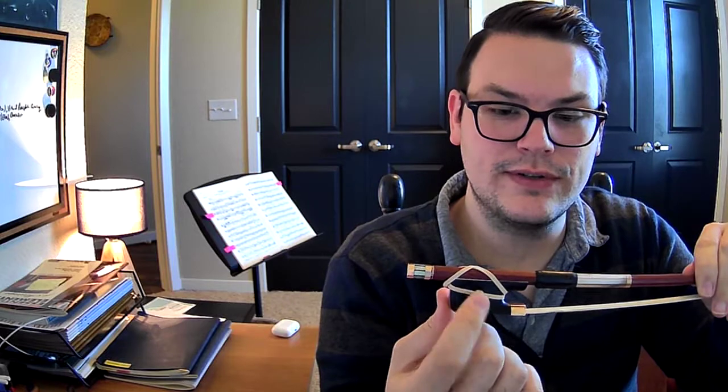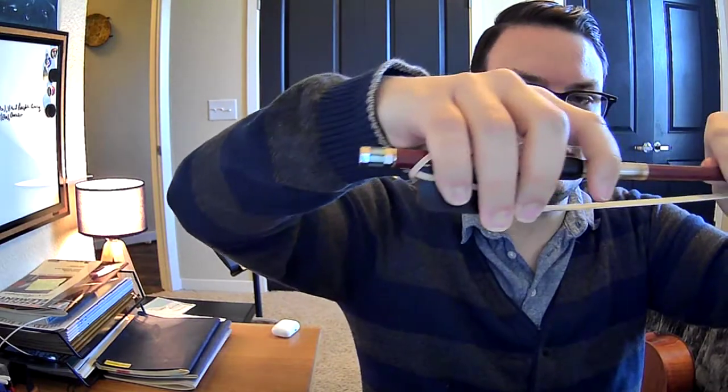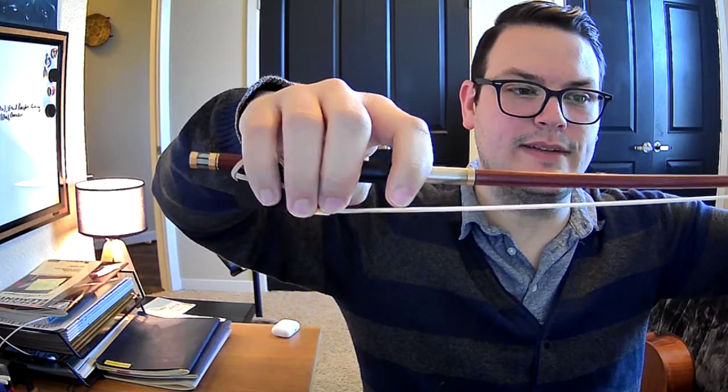You could add a reinforcer or a sticker if you wanted to, but you would just cover it up with the pinky. And then there's your bow hold as well. So you have a couple options for cello. So there you go.